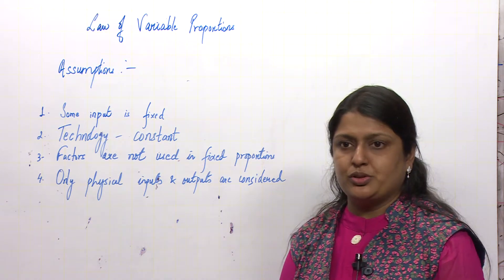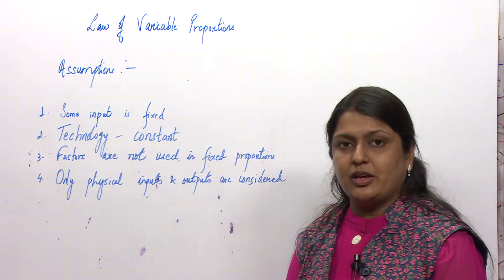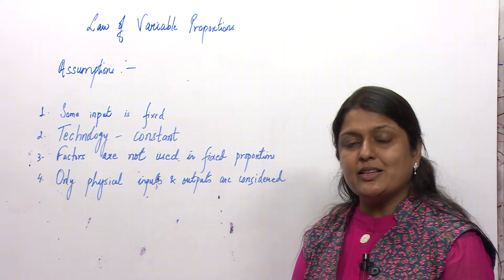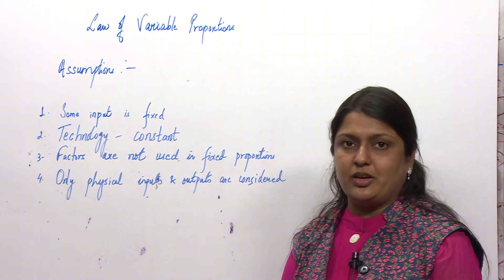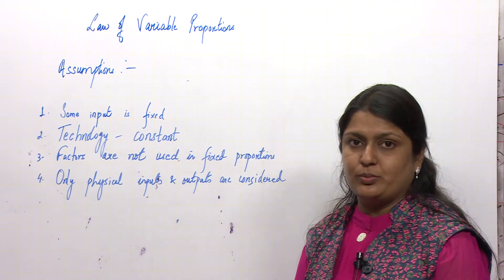Assumptions to the law of variable proportions. The law of variable proportions works in the short run, and in the short run at least one or the other factor has to remain fixed. So what is the first assumption of this law? Some factor input has to be fixed.